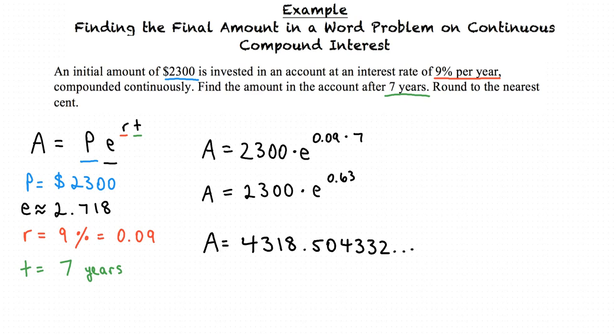Since we're dealing with dollars and cents, we're going to want to round to the nearest cent, or in other words the second decimal place. After rounding we have found that